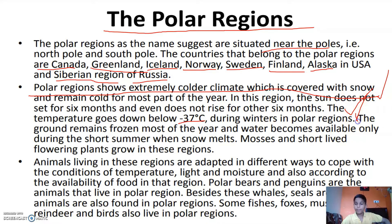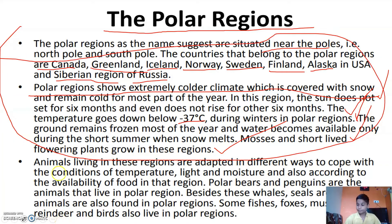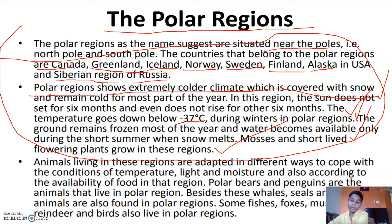The polar regions show extremely cold climate which is covered with snow and remains cold. The sun does not set for six months and does not rise for the other six months. The temperature goes down below minus 37 degrees Celsius during winter. Short-lived flowering plants grow in these regions.